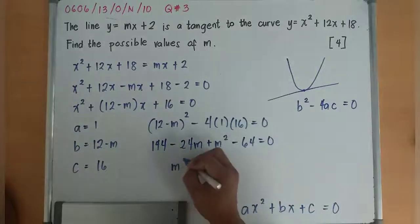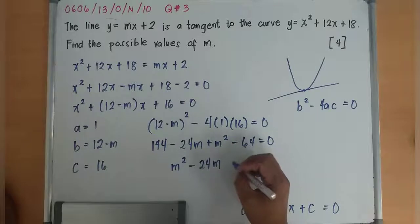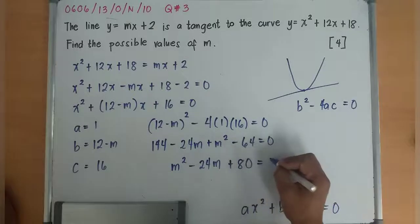So I'll have m² - 24m. 144 minus 64 will be 80. Plus 80 = 0.